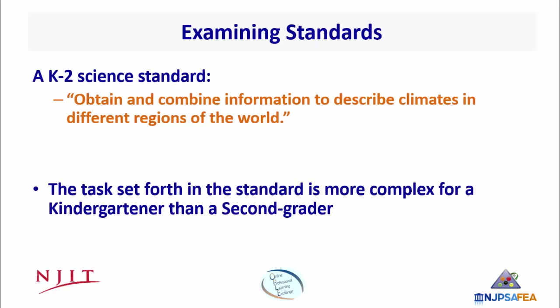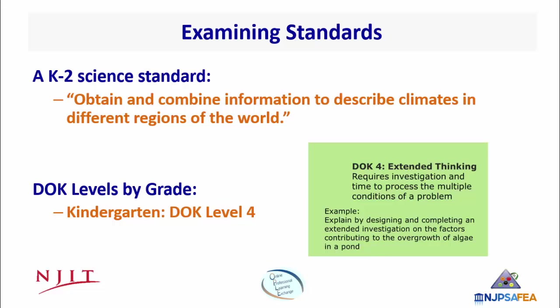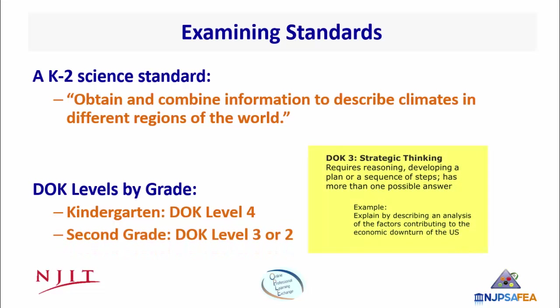The task set forth in the standard is more complex for a kindergartener than a second grader, so the DOK levels will be different. For kindergarten, obtaining and combining information to describe climates in different regions of the world would likely be DOK 4. Think of all the intermediate steps involved: a student must learn what climate and regions are, know how to find information on climate, determine how to choose what information to use, and finally decide how to pull all the information together to describe climate in different regions. For second grade, by contrast, some of those intermediate steps can be skipped. Maybe the students already know what climate and regions are and how to find information. The task is less complex because they have greater prior knowledge, so this might be a DOK Level 3 or even Level 2 task.